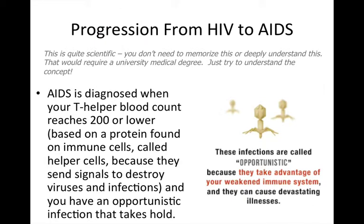Progression from HIV to AIDS. This is quite scientific — you don't need to memorize or deeply understand this; that would require a university medical degree. Just try to understand the concept. AIDS is diagnosed when your T helper blood count reaches 200 or lower, based on a protein found on immune cells called helper cells, because they send signals to destroy viruses and infections, and you have an opportunistic infection that takes hold. These infections are called opportunistic because they take advantage of your weakened immune system and can cause devastating illnesses.